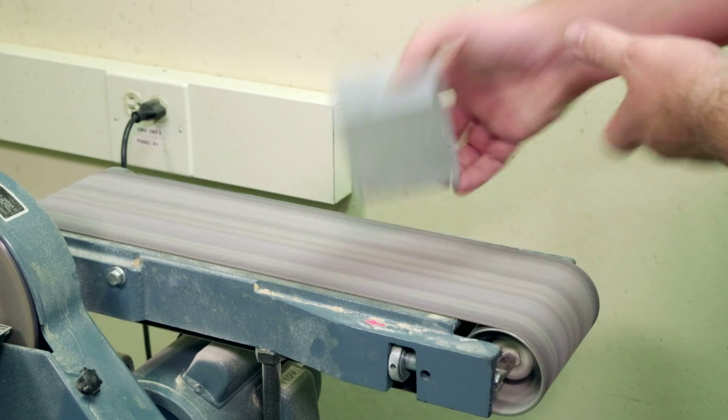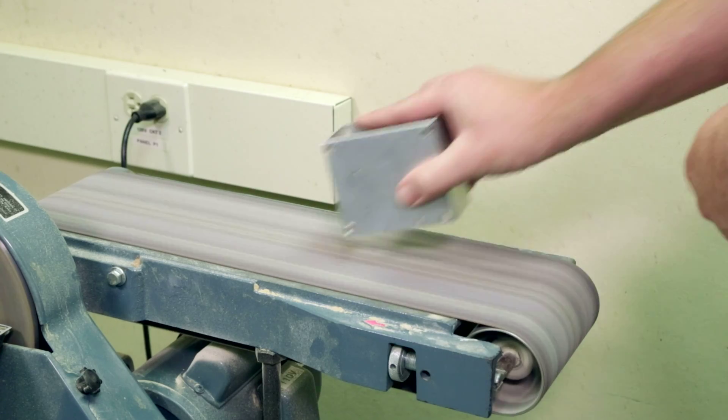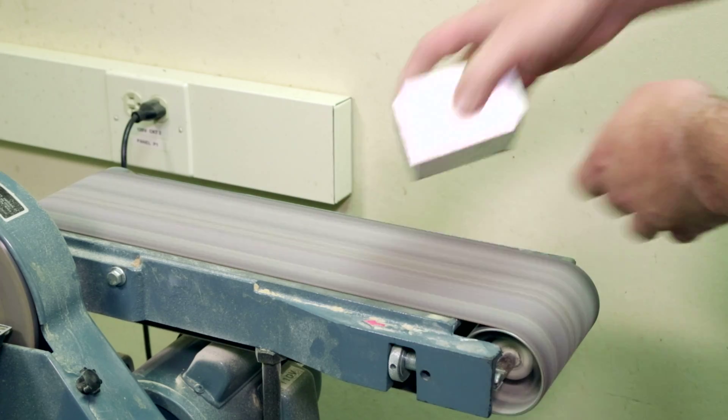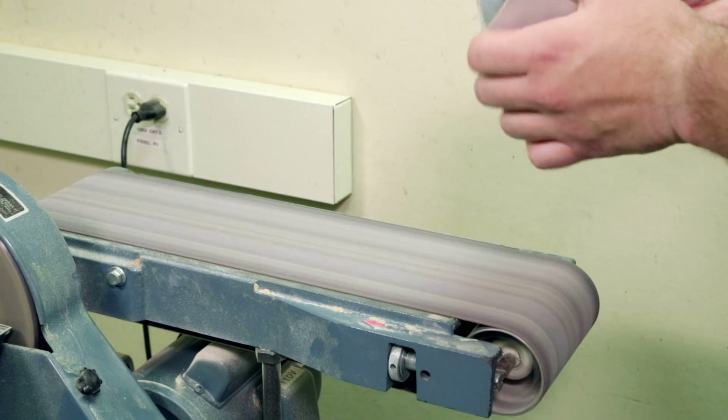The sander also provides a quick way to deburr aluminum pieces removing sharp edges. When sanding aluminum pieces for an extended duration use caution as the workpiece may become heated.